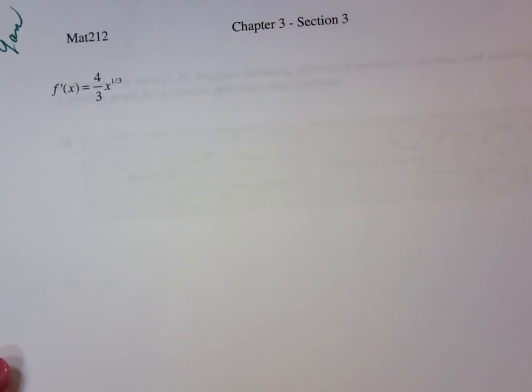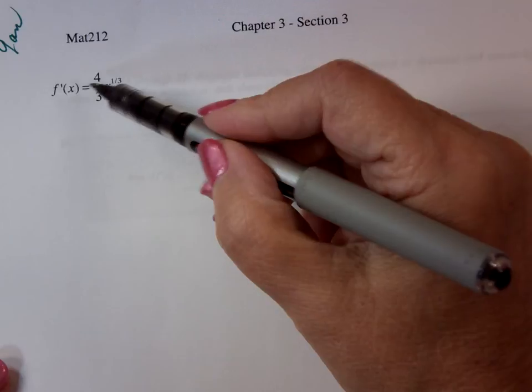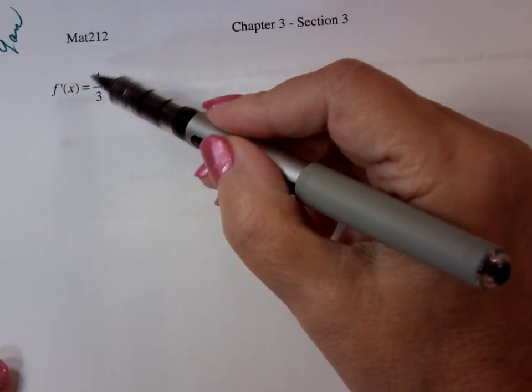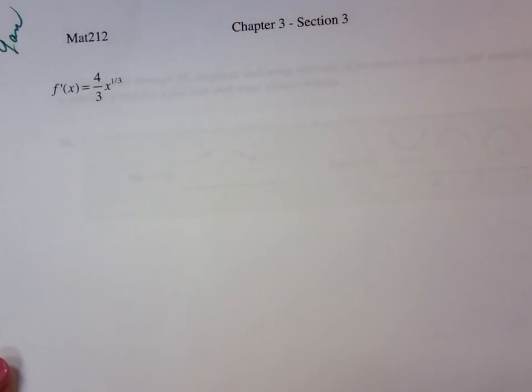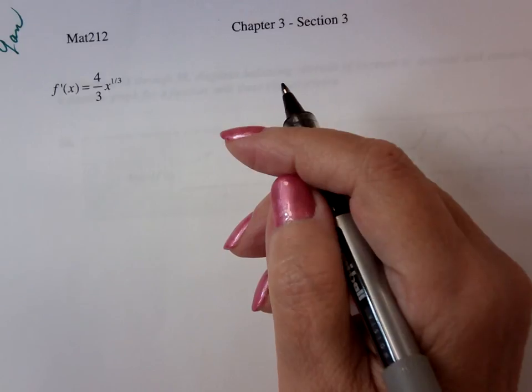Well, the first derivative is given to you. The first derivative is f prime of x equals four-thirds x to the one-third. So what we're going to do is we're going to get max, min, increasing, decreasing.